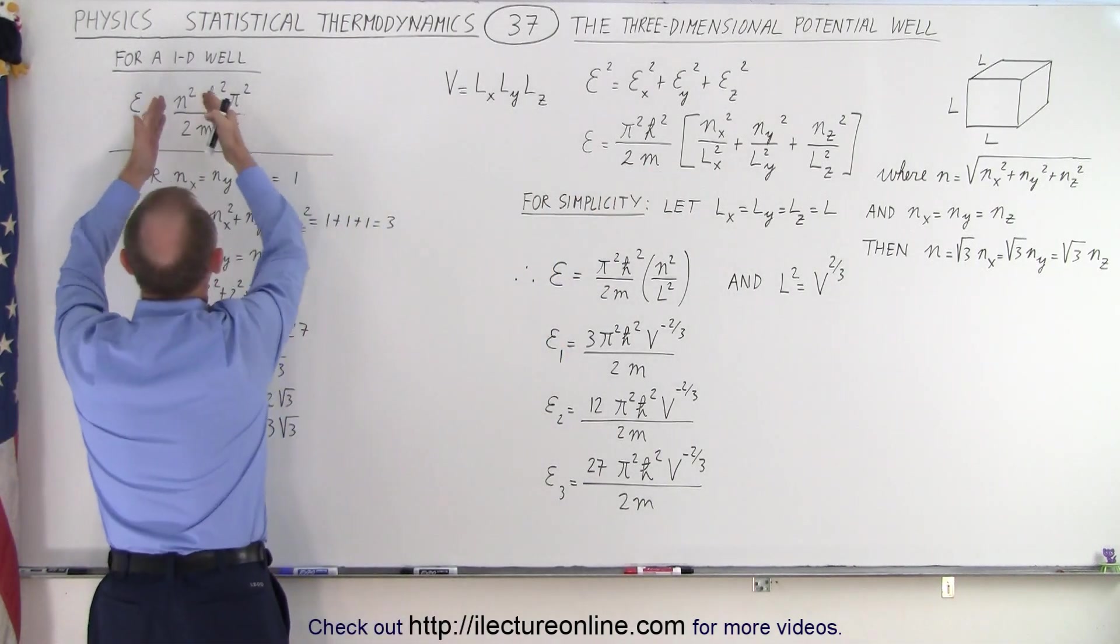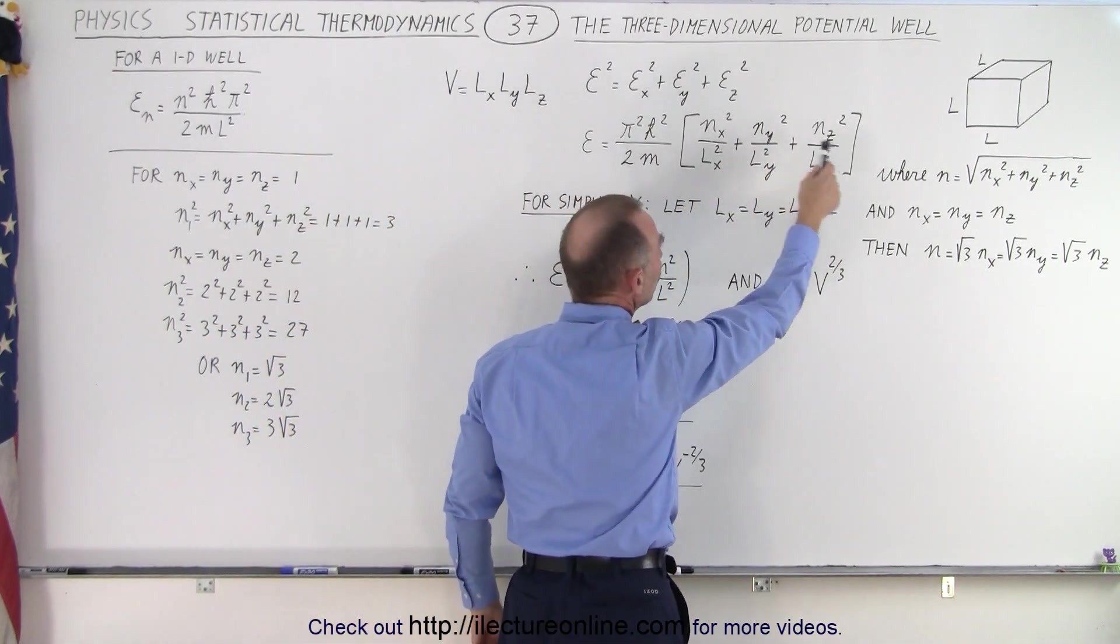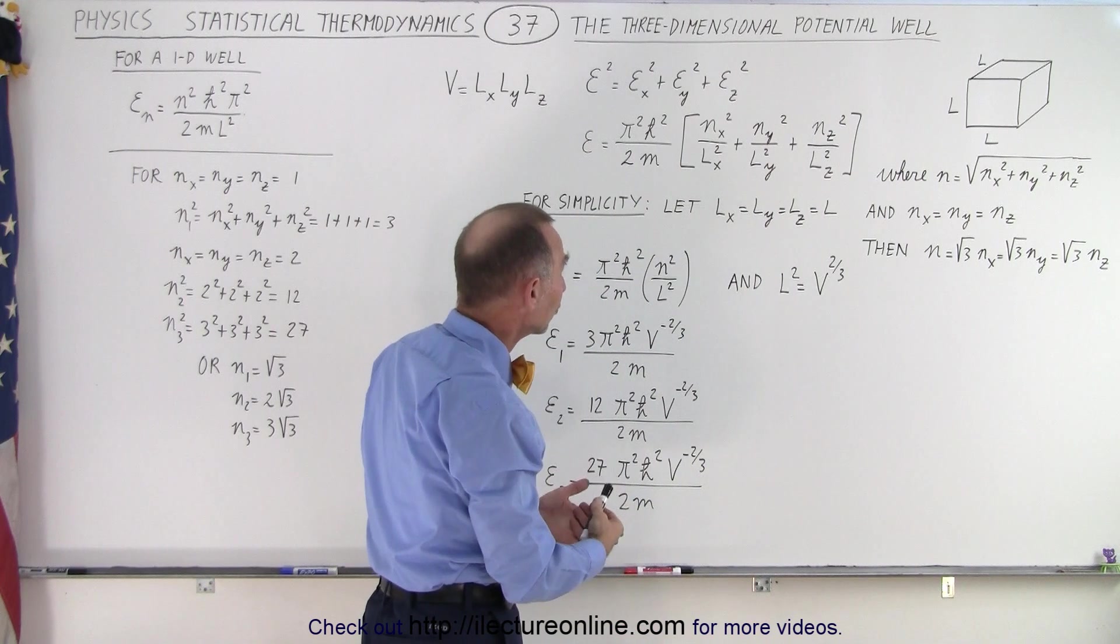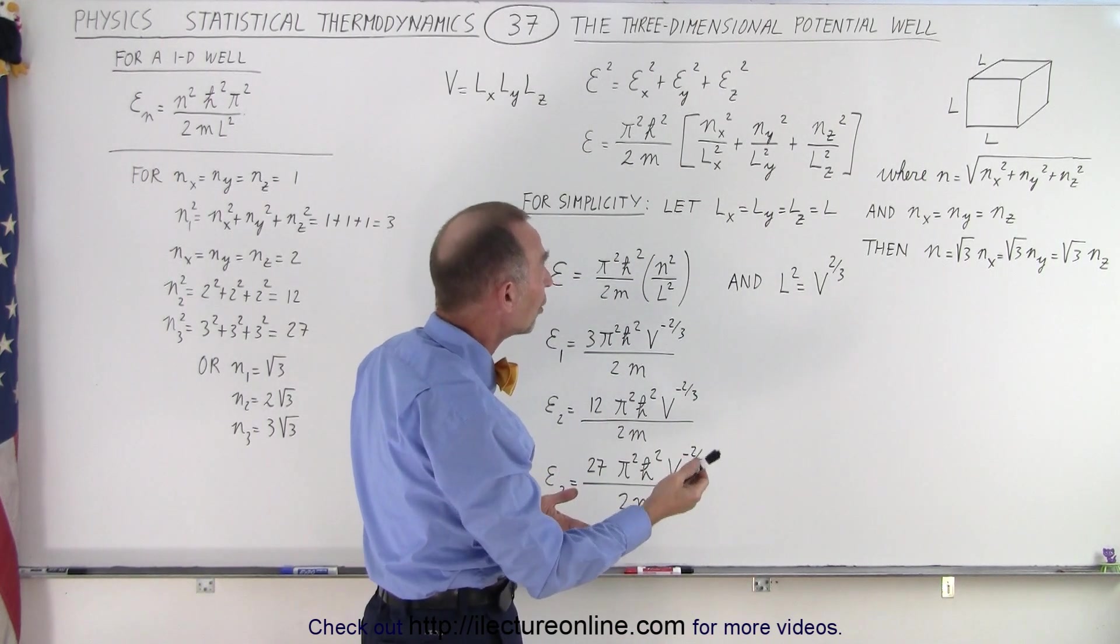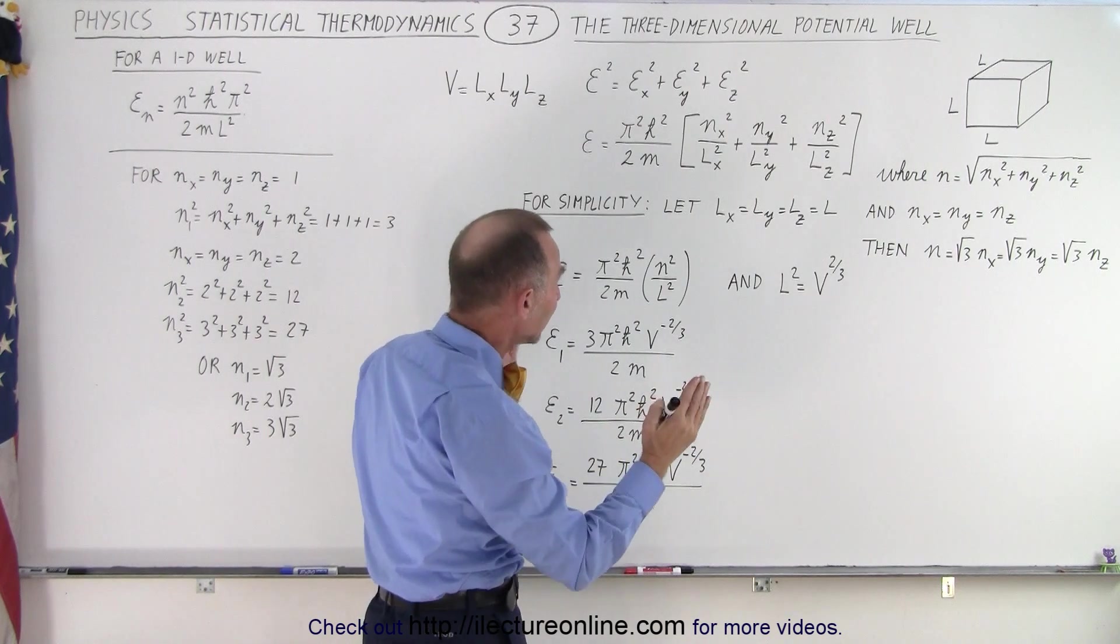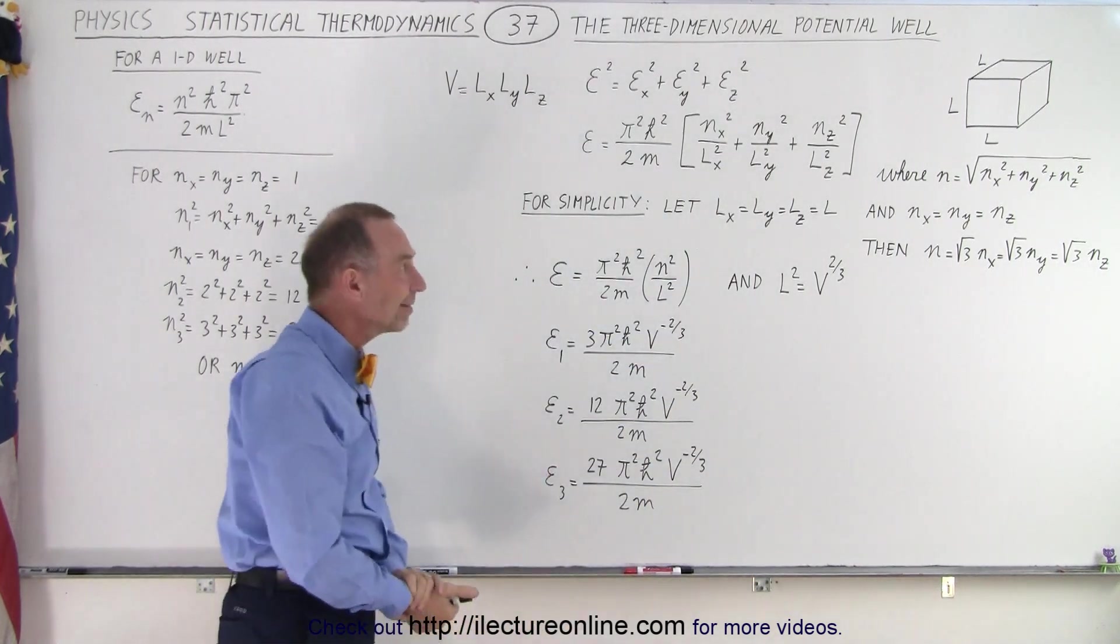But now for the n squared over l squared, we now have to add the energies or the motion in the three directions. So we have the n sub x over l sub x squared, n sub y over l sub y squared, and n sub z over l sub z squared. We need to add those together to get the total energy of the particles inside the box.